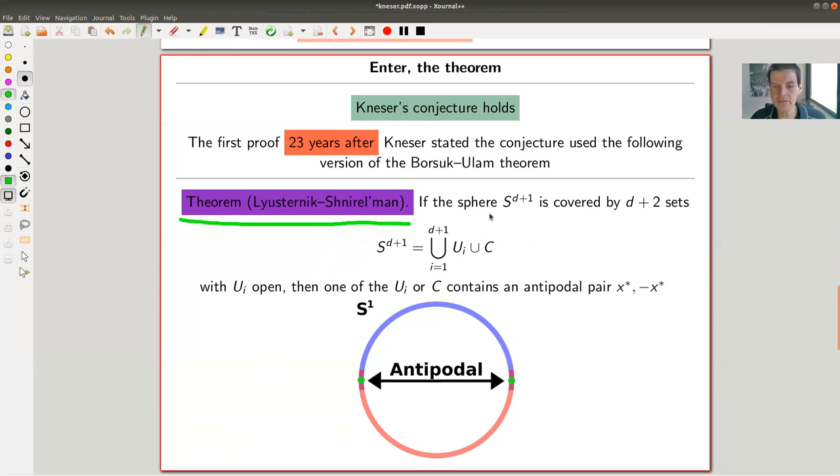The following one, so if you take a d+1 sphere, and you can cover it by d+2 sets such that you have a bunch of open sets, and you have a bunch of closed, and you have one set which can be anything but, in the formulation of the proof or when you use it for the proof of the Kneser conjecture, this will be closed. That's why they notice C. But anyway, this was d+1 open sets U_i and, well, another one, and they cover the d sphere, then at least one of them contains an antipodal pair.